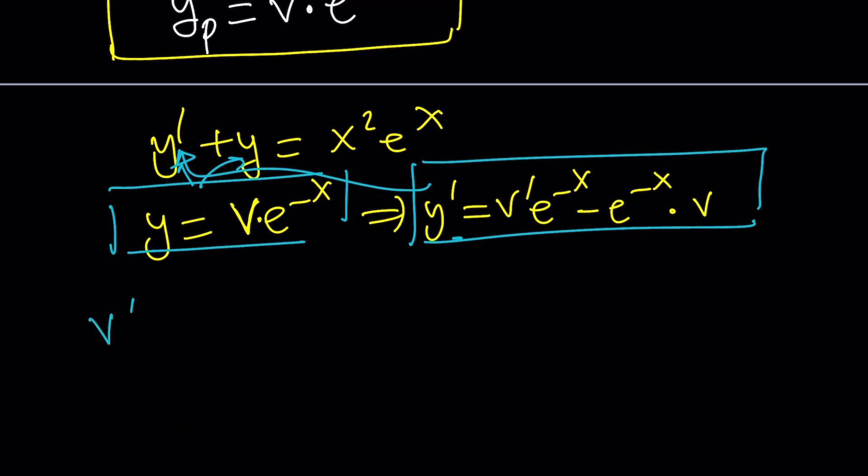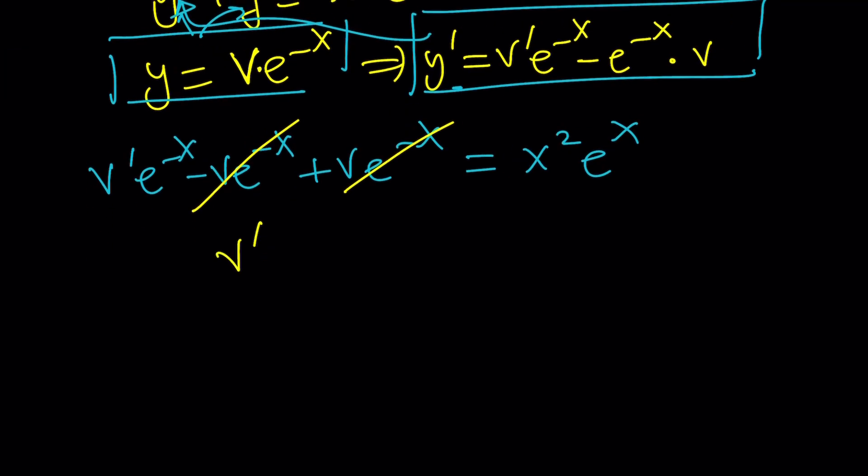y' is v'e⁻ˣ - ve⁻ˣ, and then y is ve⁻ˣ = x²eˣ. Notice that ve⁻ˣ cancels out, which is super duper nice. That's why this equation is nice. And then v'e⁻ˣ = x²eˣ. What am I supposed to do to solve for v? First, isolate v', multiply both sides by eˣ. And that's going to give you one here. v' is going to be x²e²ˣ. Great.